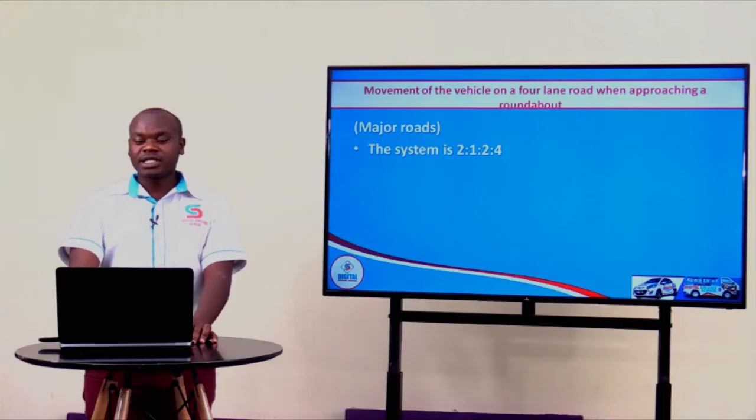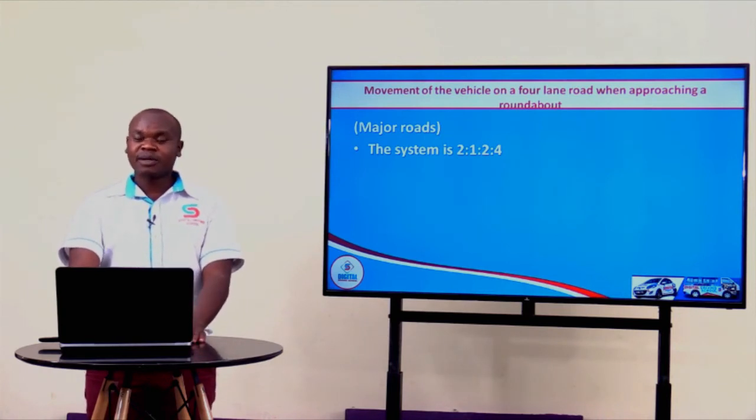The next thing I want us to look at is how you are supposed to enter the roundabout from a four-lane road or a three-lane road — the practical part of the model town board. We are going to start with a four-lane road when approaching a roundabout. A major road is a road which has more than three lanes.